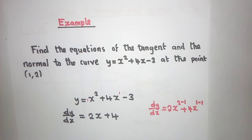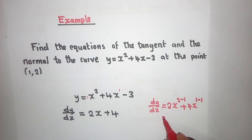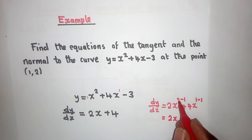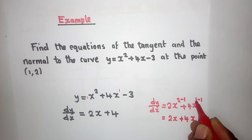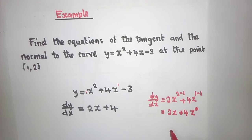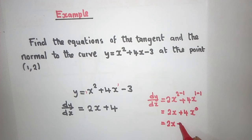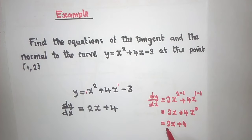Once you clean up: you have 2x because 2 minus 1 gives power 1, so it remains x. Plus 4x — but 1 minus 1 is 0, and anything to the power 0 is 1, so it will be 1 times 4 which is just 4. So dy/dx = 2x + 4. This is how we arrive at that result.